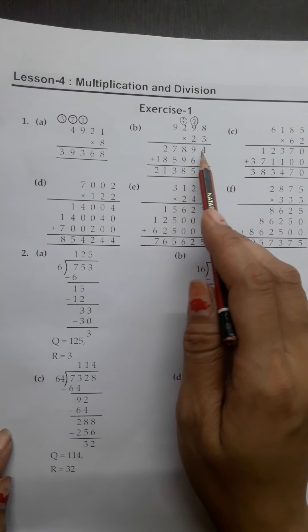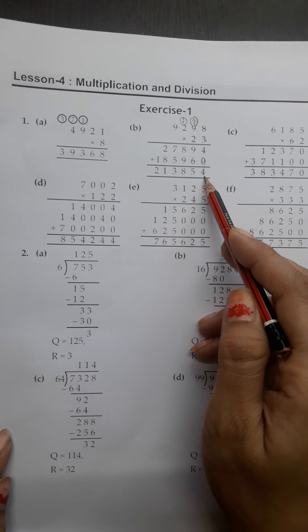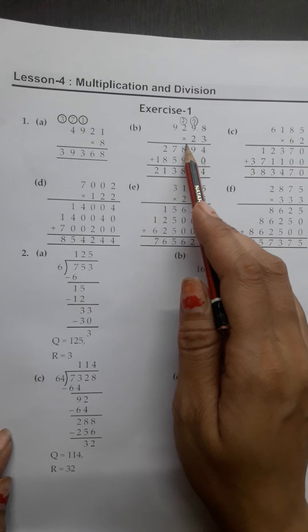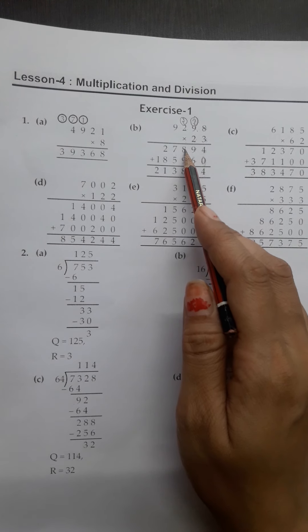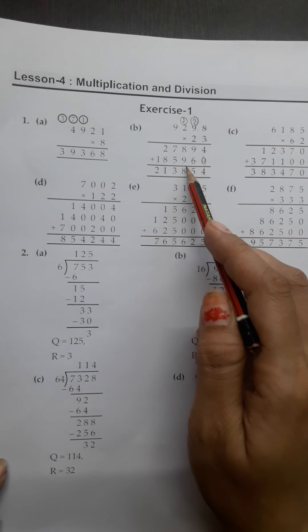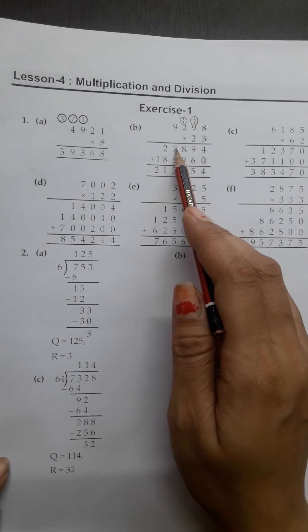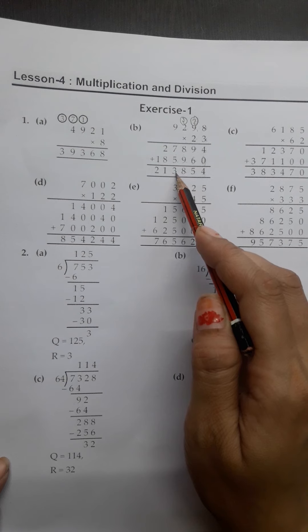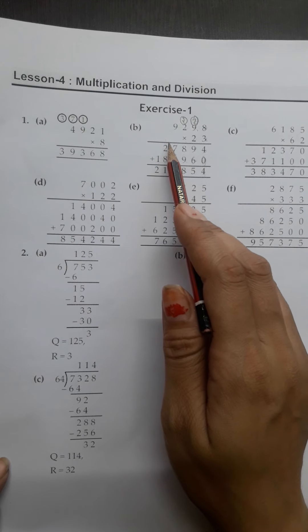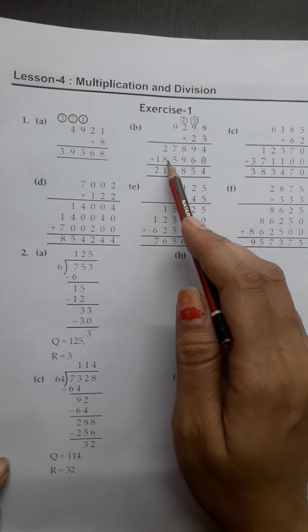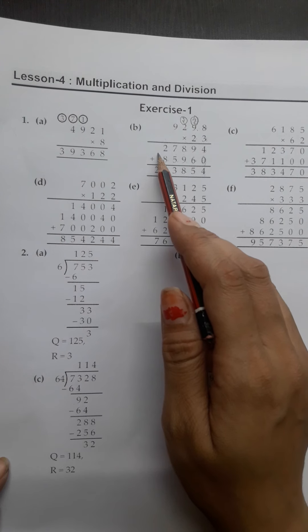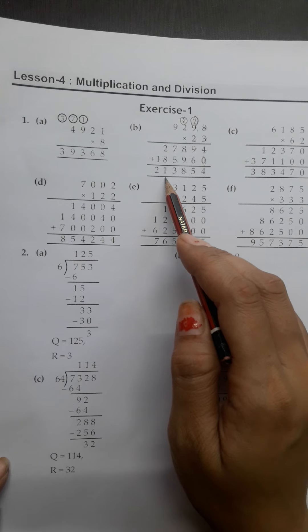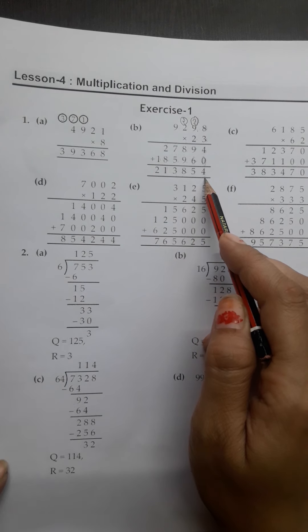Now add all these numbers. 4 plus 0 equals 4. 9 plus 6 equals 15. 8 plus 1 equals 9. 9 plus 9 equals 18. 7 plus 1 equals 8. 8 plus 5 equals 13. 1 plus 2 equals 3. 1 plus 1 equals 2. Our answer is 213,854.